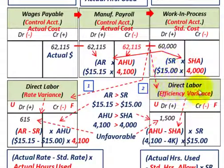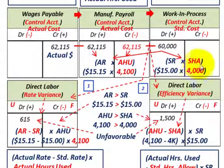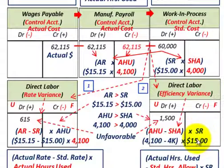Now for the direct labor efficiency variance: you take your actual hours used and compare it to your standard hours allowed. Actual hours used were 4,100; standard hours allowed were 4,000 — a difference of 100 hours. Usage was 100 hours more than the standard hours allocated, times the standard labor rate of $15 per hour: 100 hours × $15 = $1,500 direct labor efficiency variance.